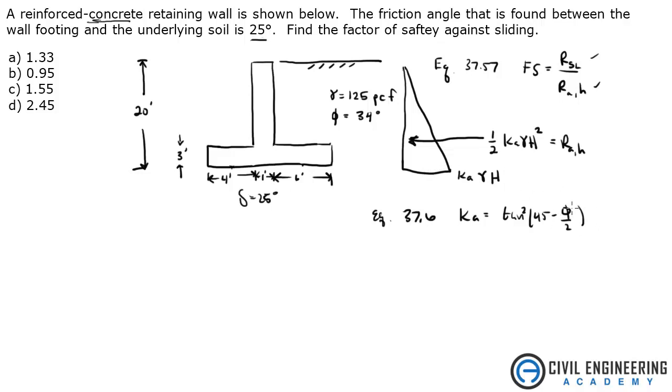Okay, so if you plug in phi, which is given here as 34 degrees, I get 0.283, so now we know Ka. So to find our FH, we're going to use one-half Ka, which is 0.283 times gamma, which is given as 125 PCF times your height, which is given as 20 feet squared. That gives me 7075, and that's in pounds. So we got the horizontal force.